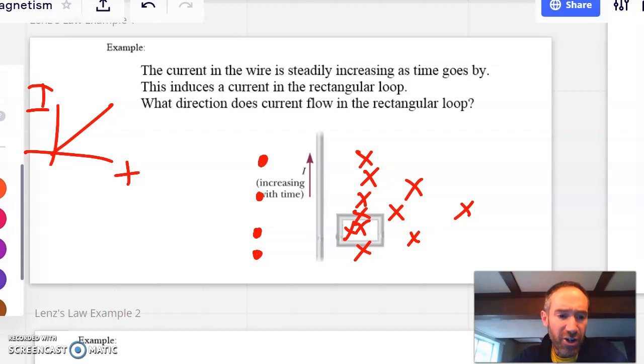And so what nature is going to do is she's going to introduce a current that will create a field to cancel that out. So I sort of think of the effect and then get the cause from it. And so there's Xs appearing over here as the current increases. And so I want to, me speaking as nature, I want to try to cancel out those Xs.